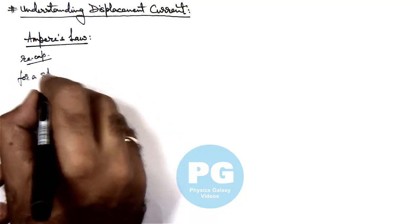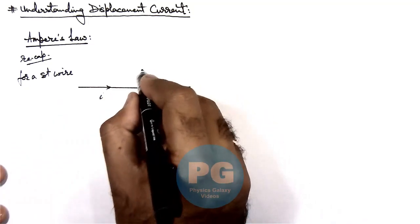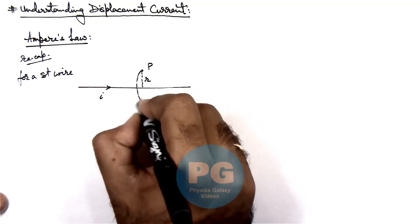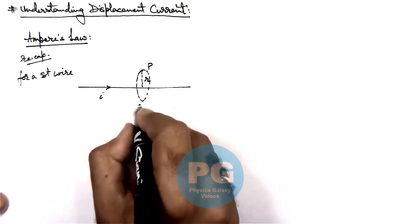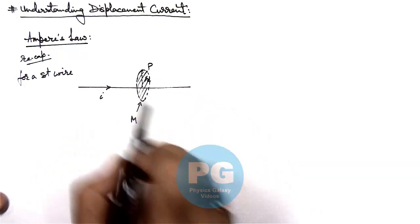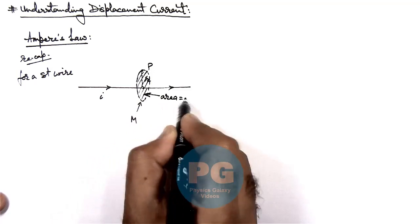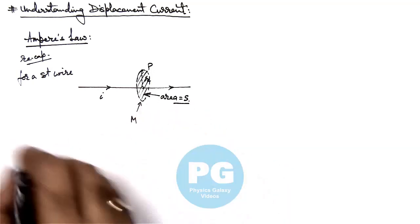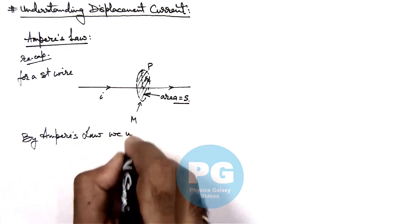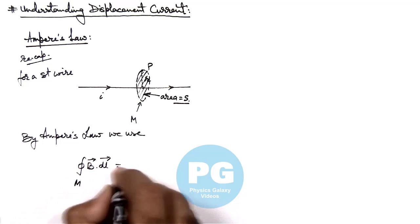If we consider a straight wire carrying a current I, and at point P we wish to find the magnetic induction due to the wire, where point P is located at a distance R, we consider a circular closed loop named M. We consider the area of this loop — named S — through which the current I is passing. By Ampere's law, the line integral of B dot dL for the closed path M equals mu-naught times I.